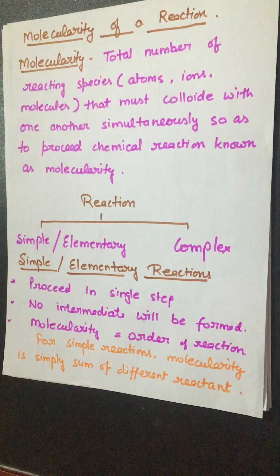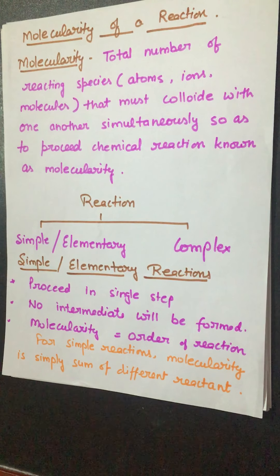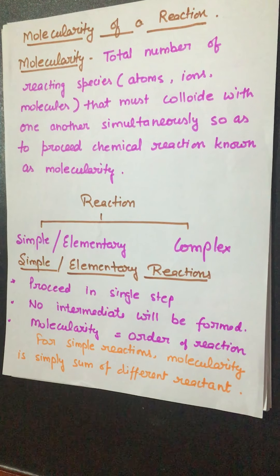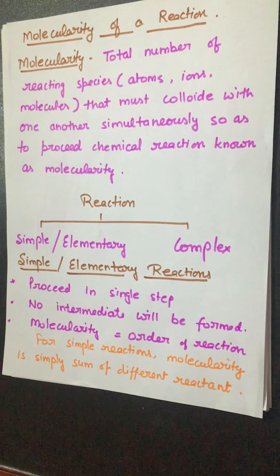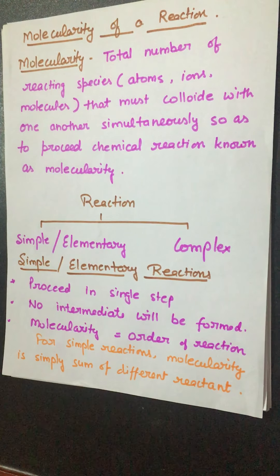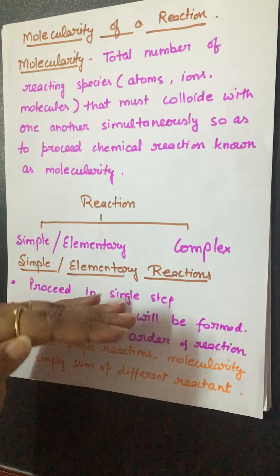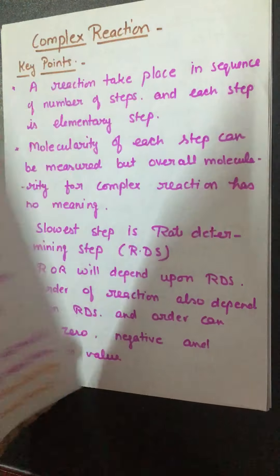Key points to remember about simple or elementary reactions: First, the reaction takes place in a single step. Second, no intermediate will be formed — only a transition state. Third, for a simple reaction, molecularity equals the sum of the reacting molecules. Fourth, the order of reaction equals the molecularity of the reaction. These are the key points regarding simple and elementary types of reactions.